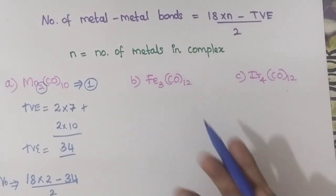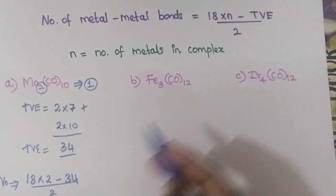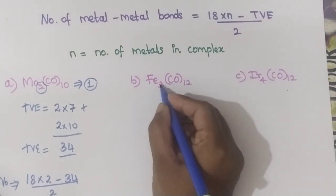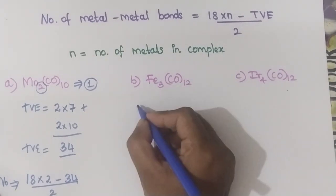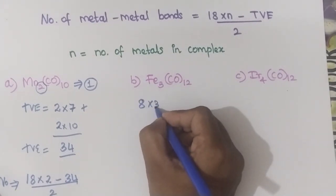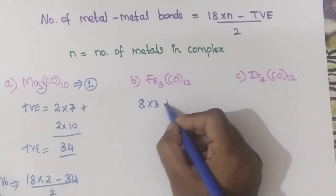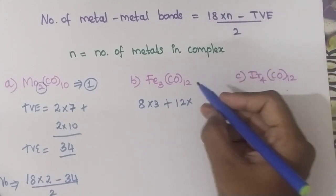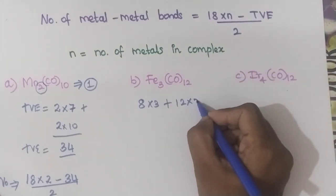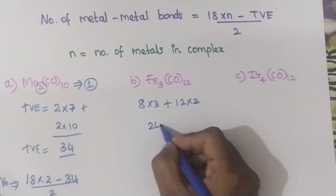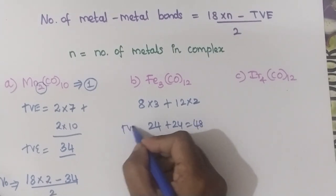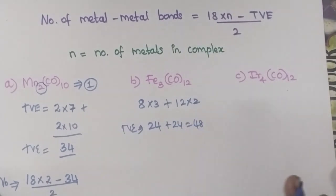Now in the second complex, Fe₃CO₁₂ — can you find out the number of metal-metal bonds? The valence electron on iron is 8. So 8 × 3 = 24, because 3 metal atoms are present. Plus 12 carbonyls: each carbonyl donates 2 electrons, so 12 × 2 = 24. Therefore 24 + 24 = 48. The total valence electron is 48.